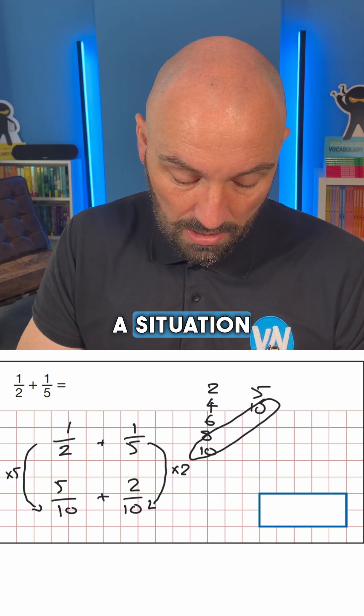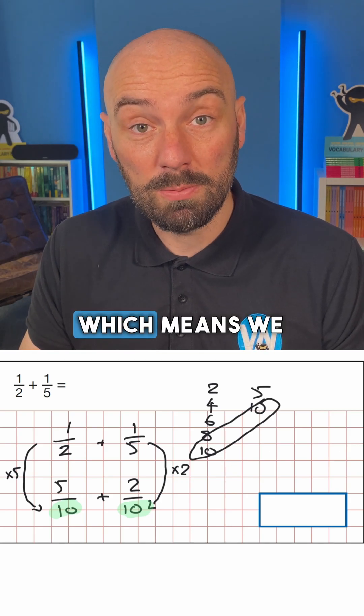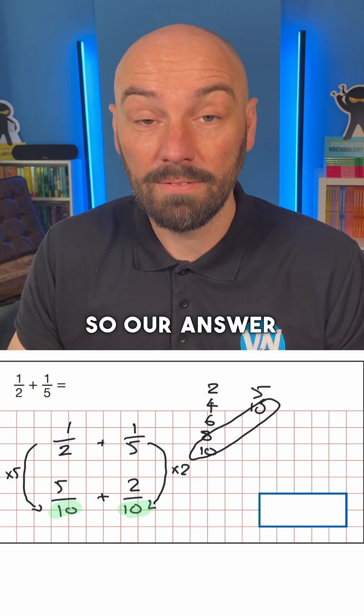And then we have a situation where perfectly our denominators are the same, which means we can just add. 5 add 2 is 7. So our answer is 7 over 10.